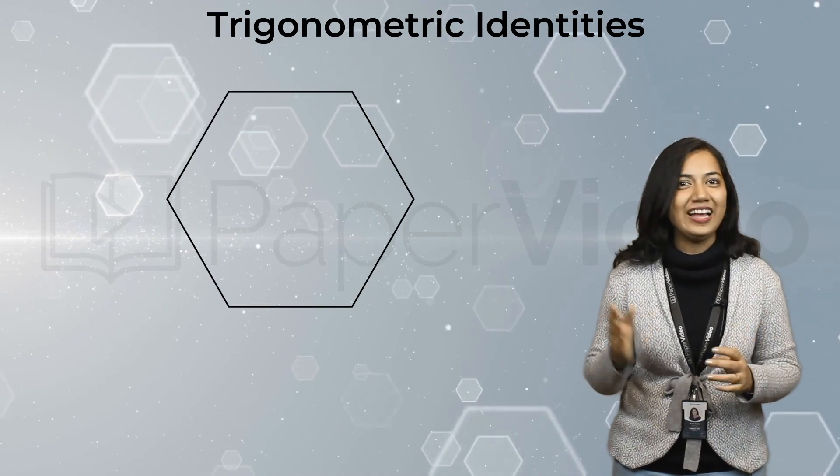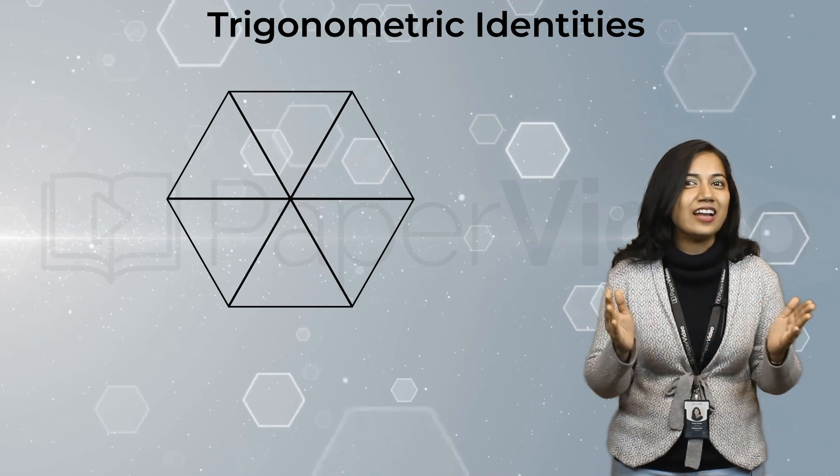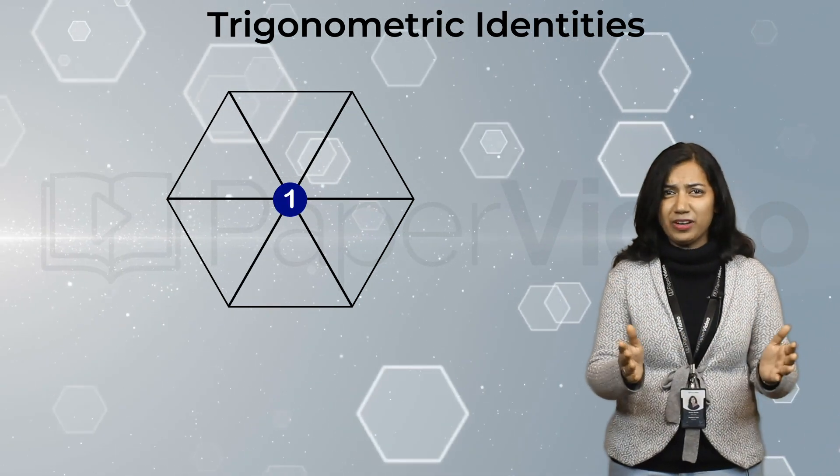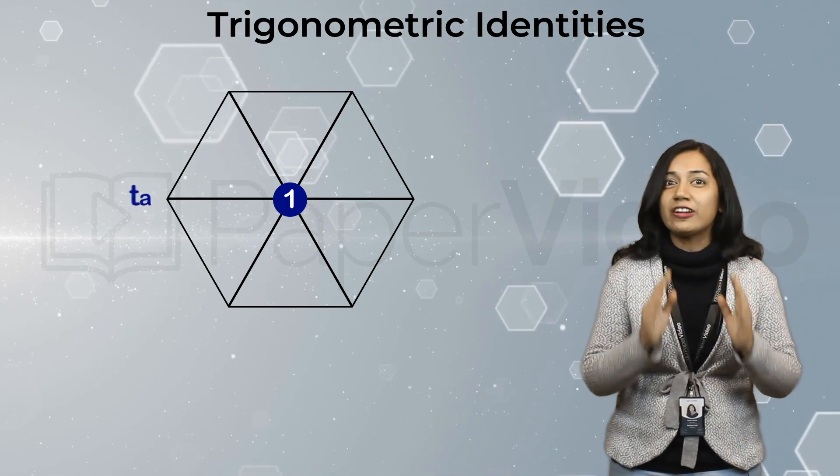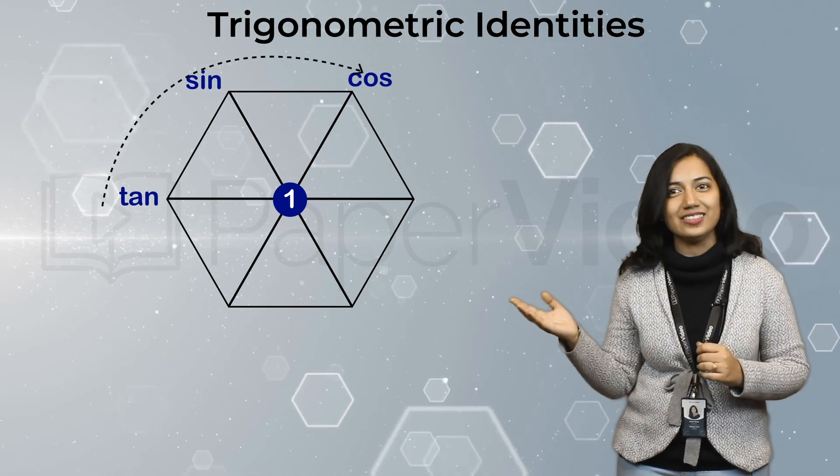So let's begin. First, we draw a hexagon like this. Now, join the opposite vertices and write one at the center of the hexagon. Remember, tan theta equals sine theta upon cos theta. So write tan, sine and cos in clockwise direction like this.